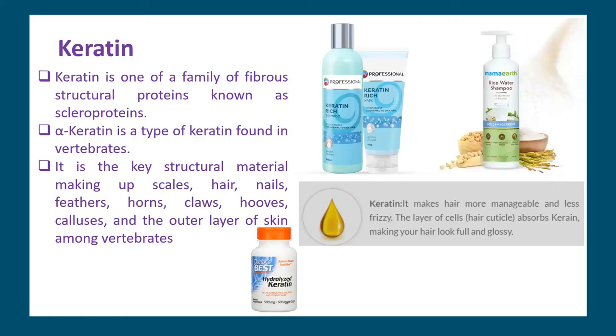Alpha keratin, which you may have heard about in shampoo advertisements, is found in our epidermal tissues. Keratin is a family of fibrous structural proteins known as scleroproteins. Alpha keratin is the key structural material making up hair, nails, feathers, horns, claws, hooves, calluses, and the outer layer of skin in vertebrates. These proteins contain around 20 amino acids and can have primary, secondary, tertiary, or quaternary structures — although around 200 amino acids may exist in nature, 20 are highly identified.